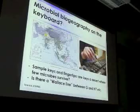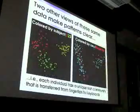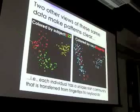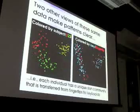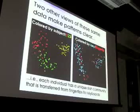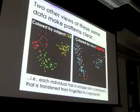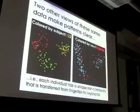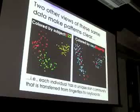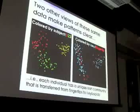Another view of exactly the same data makes the main findings immediately clear. At each point on this plot there's a microbial community, either from a fingertip or a key. If I color those by subject, you can see the first, second, and third person — all of their keys and all of their fingertips — cluster very nicely by person. So we can say something about the transfer back and forth between our microbes and our environment. We see very little separation between keys and fingertips from the same person. Each of us has a unique skin community that we transfer from our fingertips to our keyboards as we type.